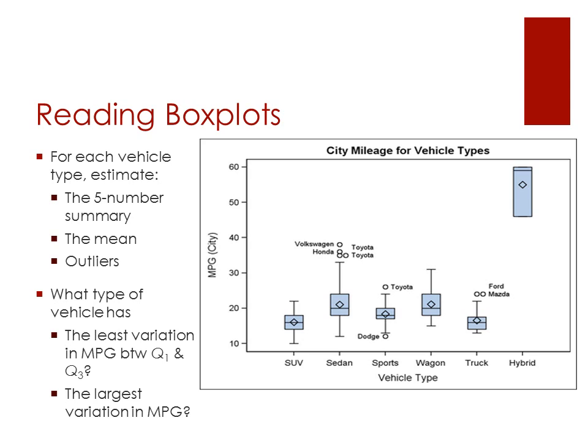The last thing to cover is reading box plots. This is typical of information found in consumer reports when assessing vehicle purchases. Which vehicle has the least variation between Q1 and Q3? Sports vehicles have the smallest space between Q1 and Q3, so that's the least amount of variation. Which has the largest? Hybrids have the greatest variation between Q1 and Q3.